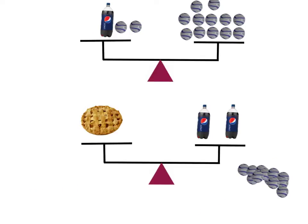I'm going to show you another example here. I have a two-liter bottle of Pepsi and two marbles, and that is equal to twelve marbles. What I need to figure out is how many marbles an apple pie is equal to. So an apple pie is equal to two Pepsis, but I don't know how many marbles that is worth, so I'm going to start with this first pan balance.